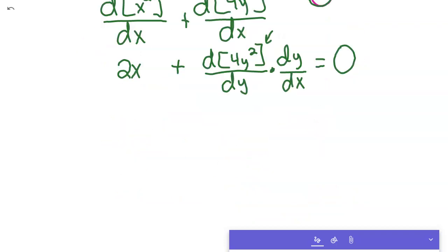and so if we do that, I'll go to red. So, this 2x, we're going to stay the same. Now, the derivative of 4y squared with respect to y would be 8y to the first power, times dy dx.